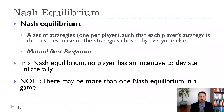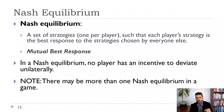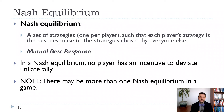A Nash equilibrium is a mutual best response: my strategy is a best response to your strategy, and your strategy is a best response to mine. If we are in a mutual best response, there's no incentive for either of us to deviate unilaterally. This can be a little confusing — in the prisoner's dilemma, confess-confess is the Nash equilibrium, but not-confess, not-confess is the social optimum.